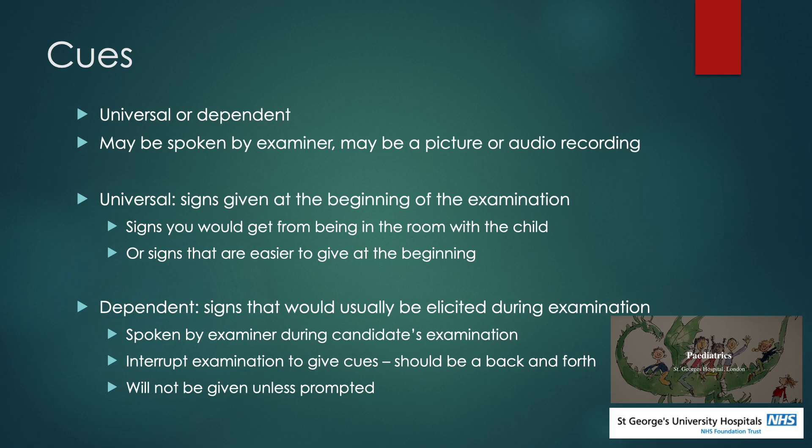For example, I might say I would feel for hepatomegaly and describe how I would do that. Then the examiner would say you can feel the liver five centimetres below the costal margin, or something like that. But those cues won't be given unless we specifically prompt the examiner by saying we'd look for that sign.